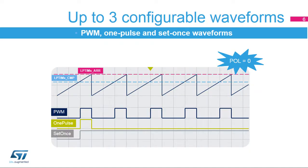The LP-TIM-CMP and LP-TIM-ARR registers, in conjunction with the bitfields WAVE from the LP-TIM-CFGR register and SNG-STRT from the LP-TIM-CR register, are used to control the output waveform. The output waveform is either a typical PWM signal — with its period and duty cycle controlled by LP-TIM-ARR and LP-TIM-CMP registers respectively — or a single pulse with the last output state defined by the configured waveform. If the last output state is the same as at the waveform's beginning, one-pulse mode is configured; if not, set-once mode is configured. The output polarity is controlled through the WAV-POL bit field in the LP-TIM-CFGR register.